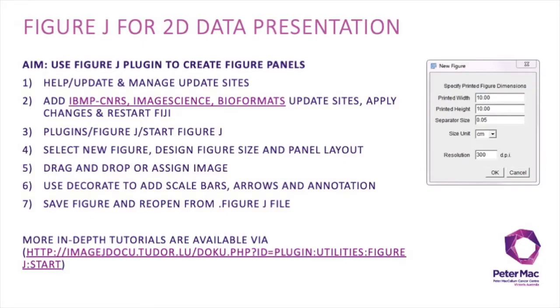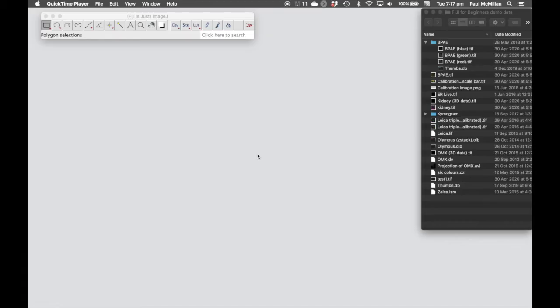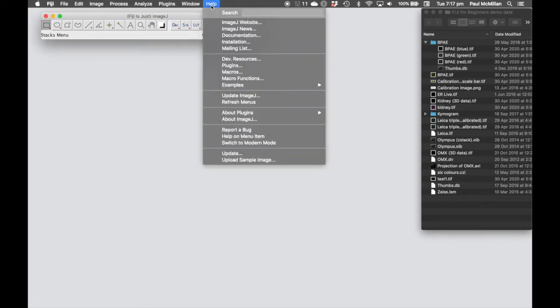Another way of presenting 2D data without making panels manually is to use a plugin within Fiji called FigureJ. To add these plugins, we go to Help, Update.